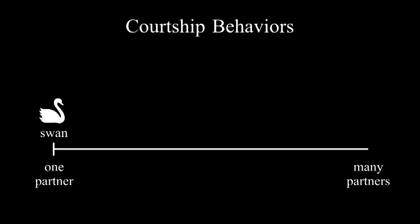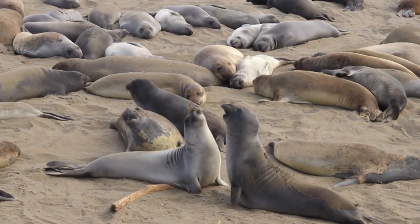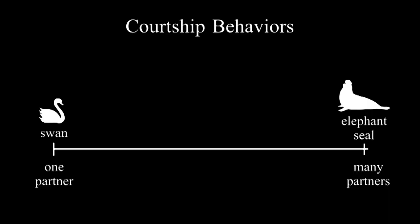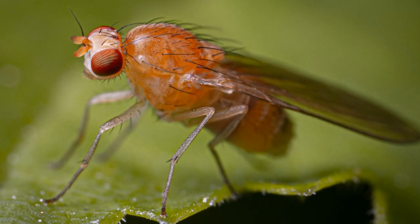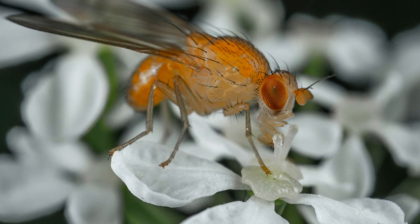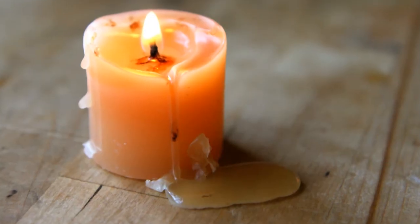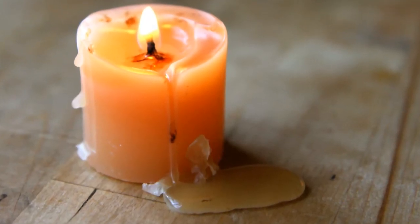If you're a swan, you stick to one partner for life. If you're an elephant seal, you could keep a harem of a hundred females. Fruit flies have many partners. A female fly is very picky about who she mates with. A male fly is not picky at all. He'll mate with a piece of wax if you wiggle it the right way.